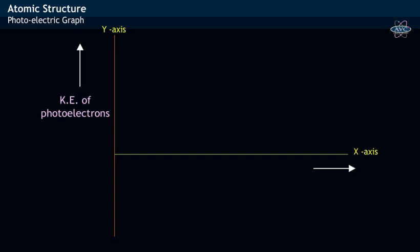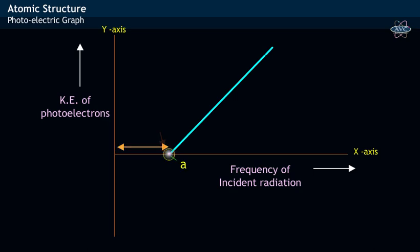Let us see the graphical representation of photoelectric effect. When a graph is plotted with kinetic energy versus frequency of incident light, then a straight line is obtained. The point A on X axis refers to the threshold frequency nu0. When this straight line is extrapolated, it meets at point B on Y axis, which is the intercept.